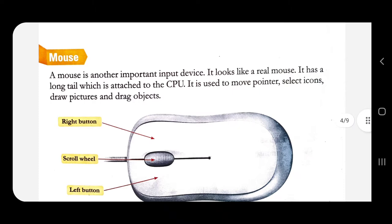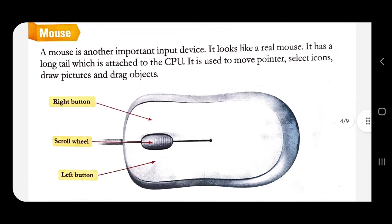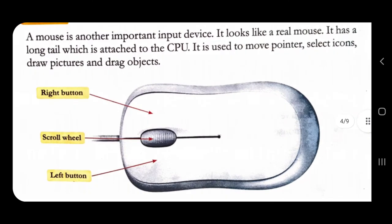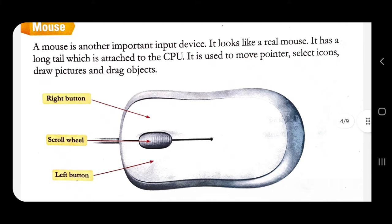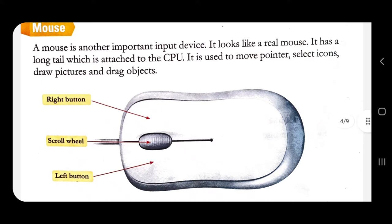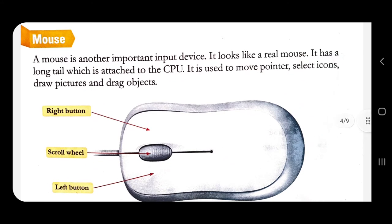Today we will learn about one more important part of the computer, that is the mouse. See the picture — this is how a mouse looks like. A mouse is another important input device. It looks like a real mouse; it has a long tail which is attached to the CPU.